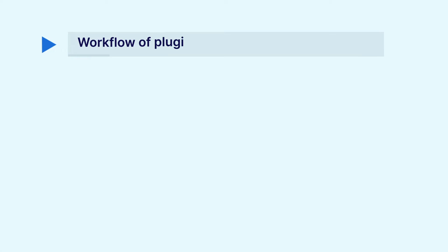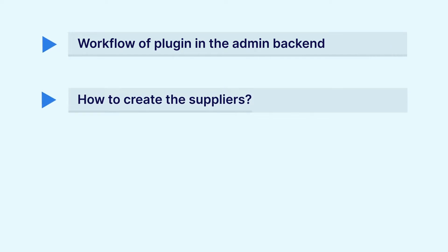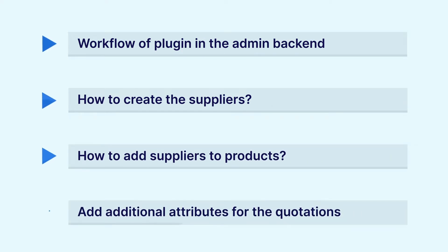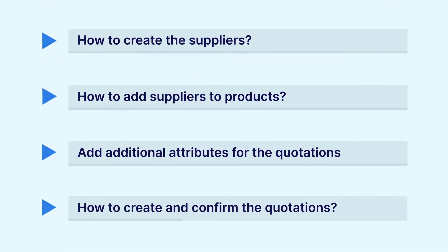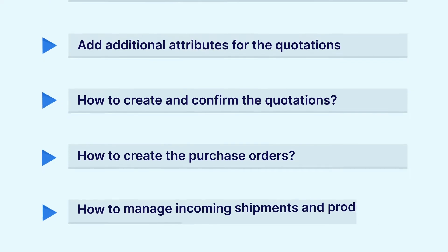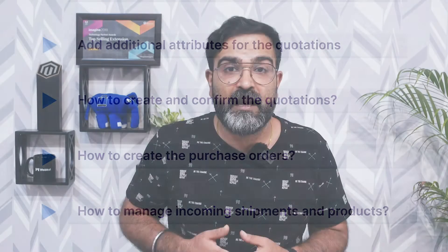In today's video tutorial we'll be checking out the workflow of this plugin at the admin backend panel of Bagisto, and we'll be checking out how the admin would be able to create suppliers, add suppliers to products, how to add additional attributes for the quotations, how to create and confirm quotations, how to create purchase orders and how to manage incoming shipments and products in the admin backend panel.